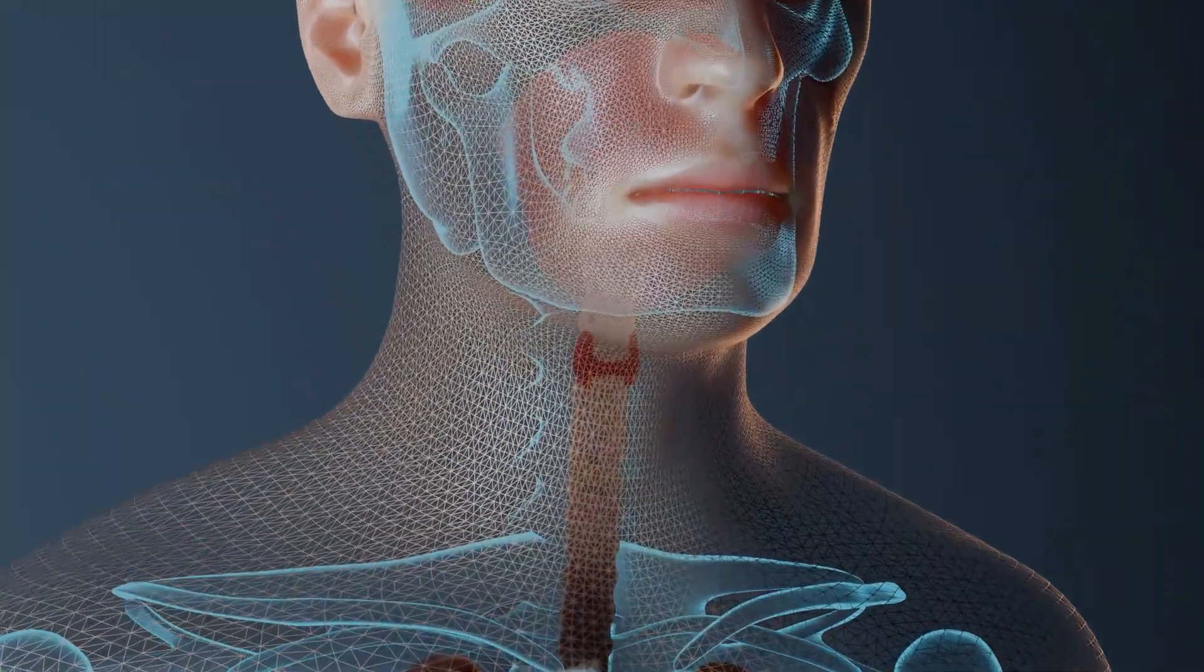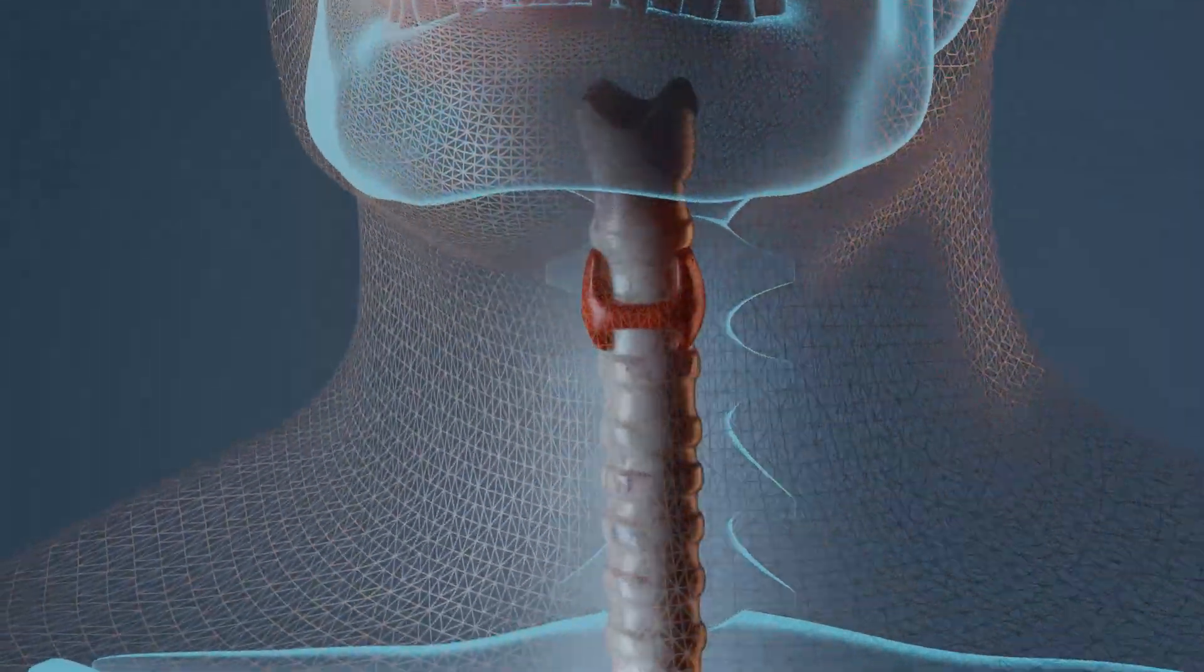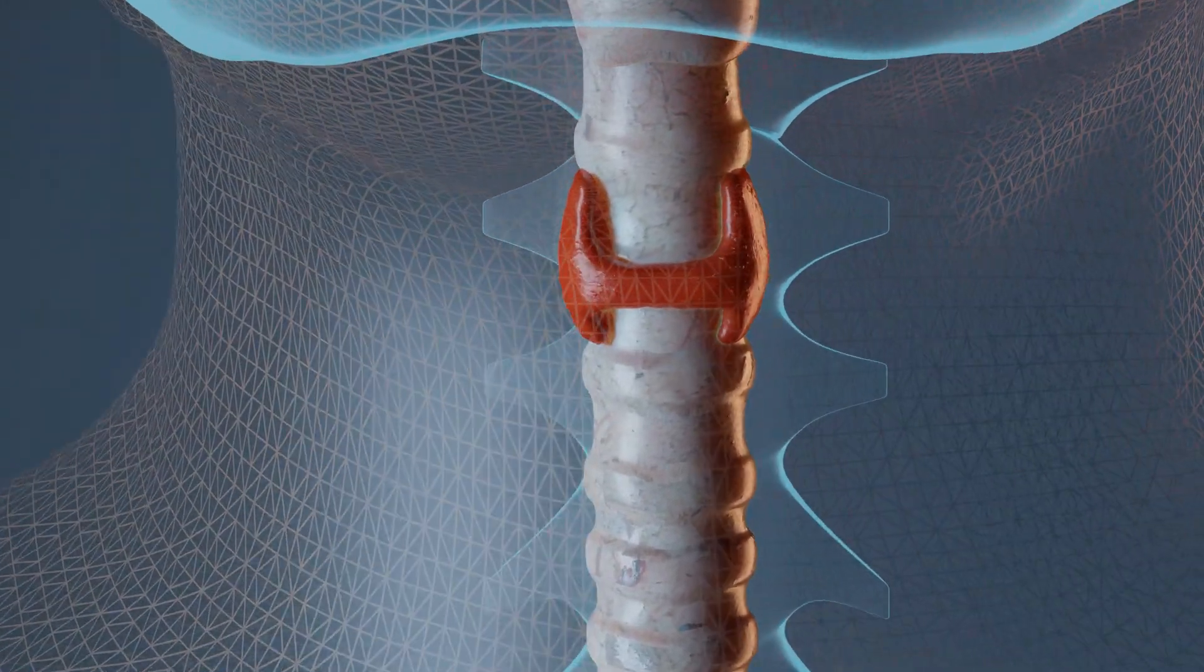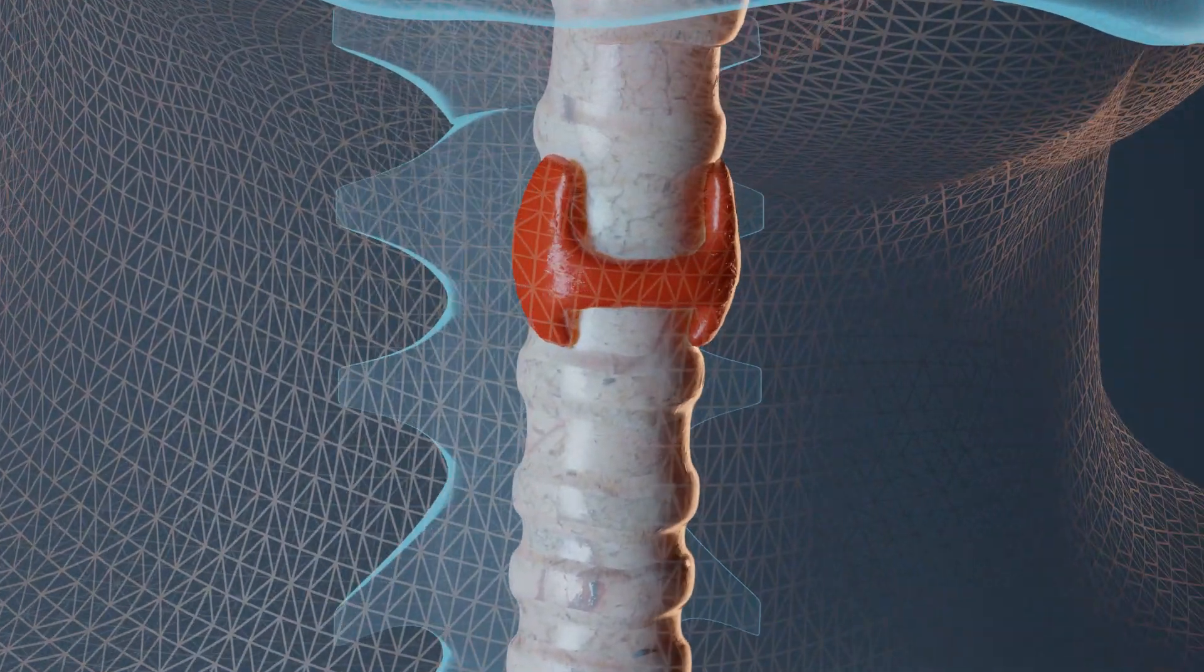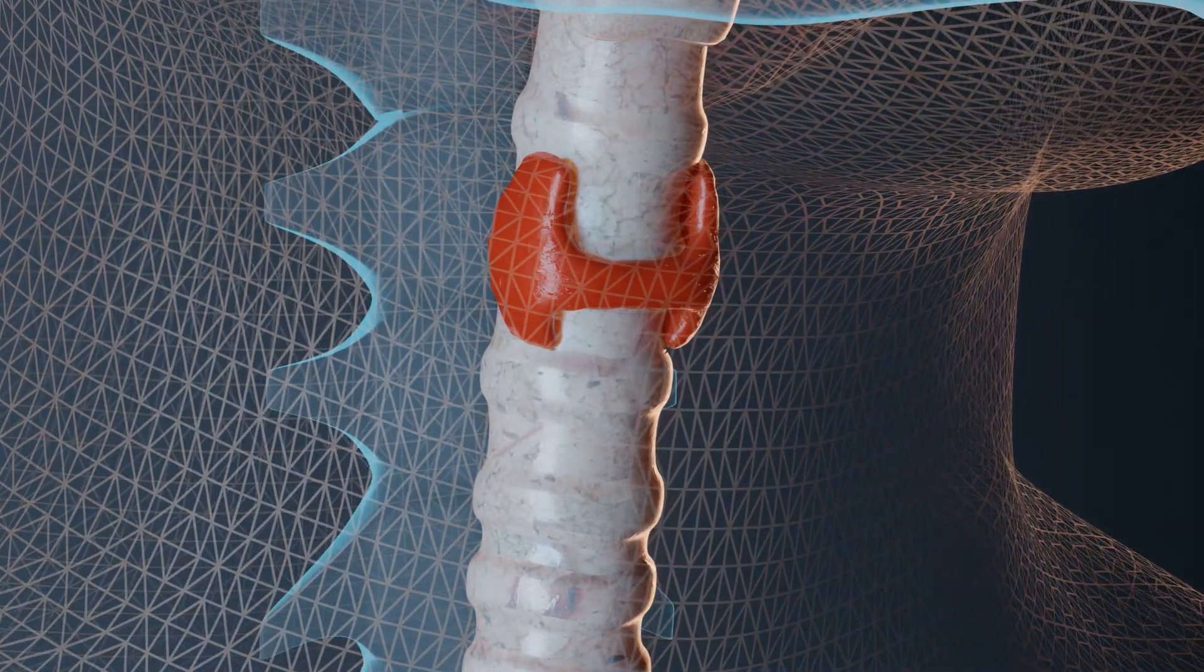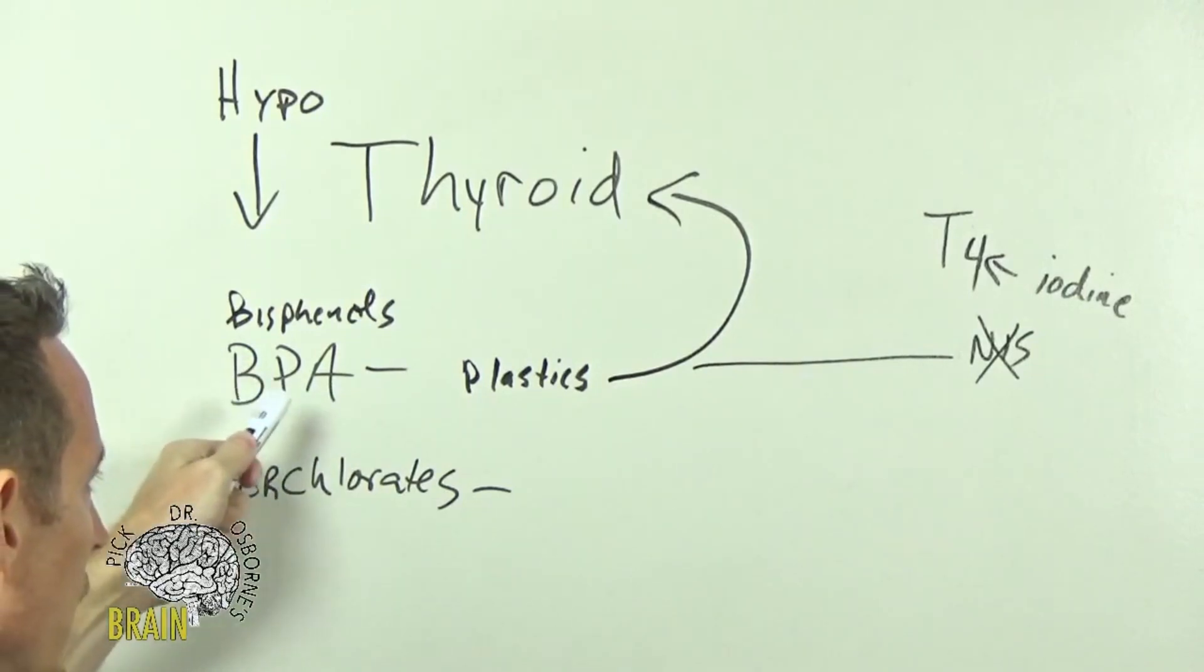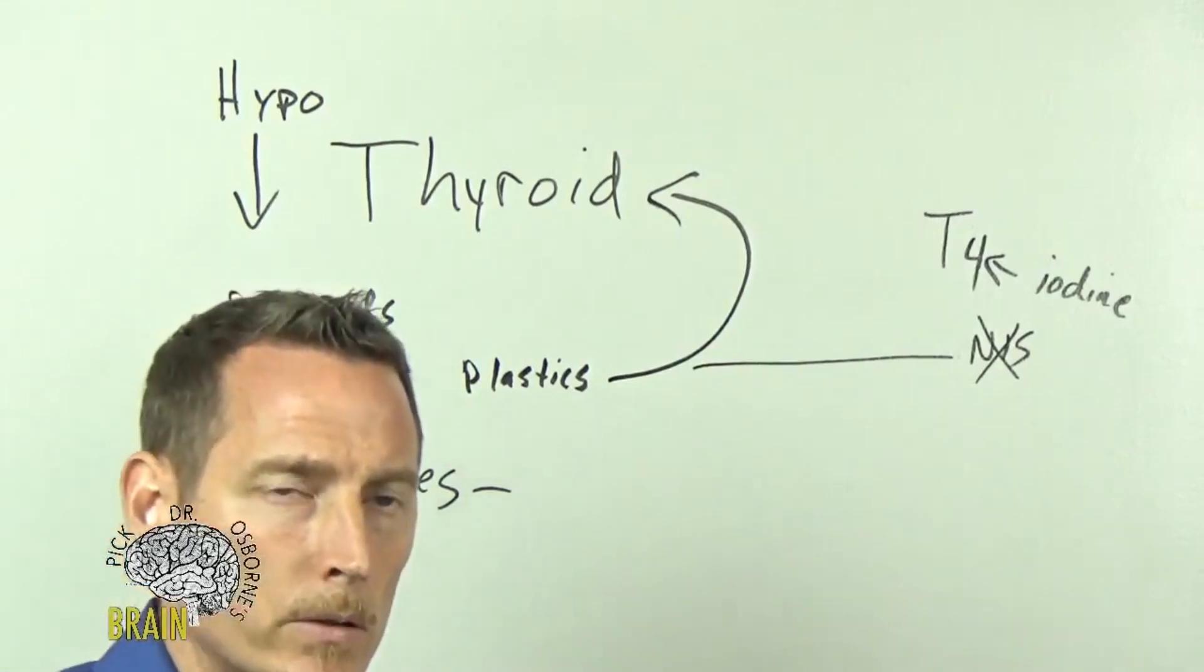It's transported through something called an NIS transporter. What happens with BPA is that it makes it harder for iodine to be taken into your thyroid gland. If you're drinking out of plastics, eating off plastics, or using plastic aggressively for cooking, that's not a good idea.